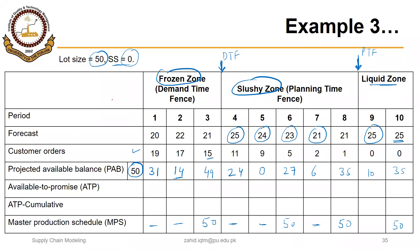So we have made the MPS using the same logic. In this case the safety stock was zero, so whenever PAB was negative we had an MPS receipt in that period. Now we have to calculate the available to promise — first discrete ATP, then cumulative ATP.